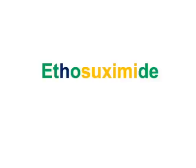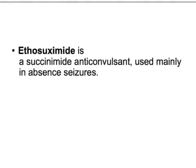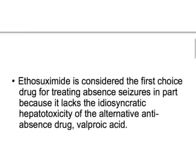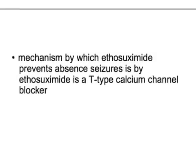There are only two main points to remember about ethosuximide. First, it is used in the treatment of absence seizures — it is the first-line drug. The second-line drug is valproic acid. Ethosuximide is preferred as the first choice because it lacks the idiosyncratic hepatotoxicity associated with valproic acid.